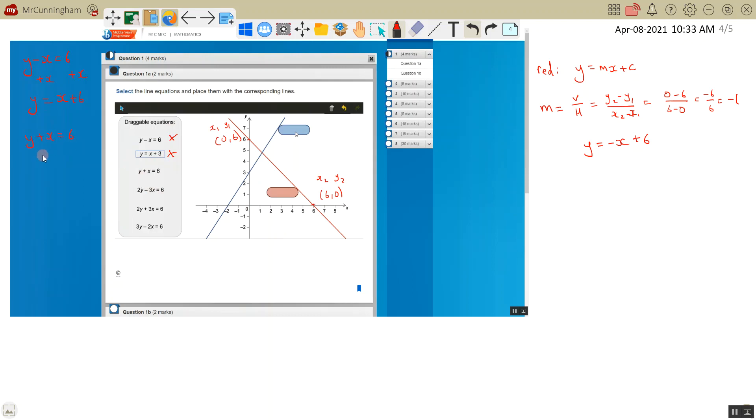Let's try y plus x equals 6. To get it as y equals, subtract x from both sides. I get y equals -x plus 6. That is exactly the same, so our red line is y plus x equals 6.